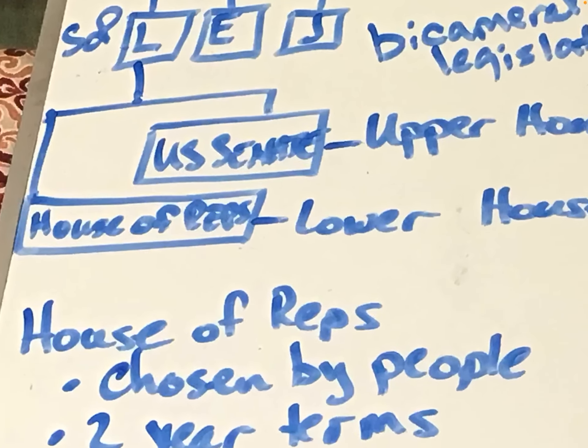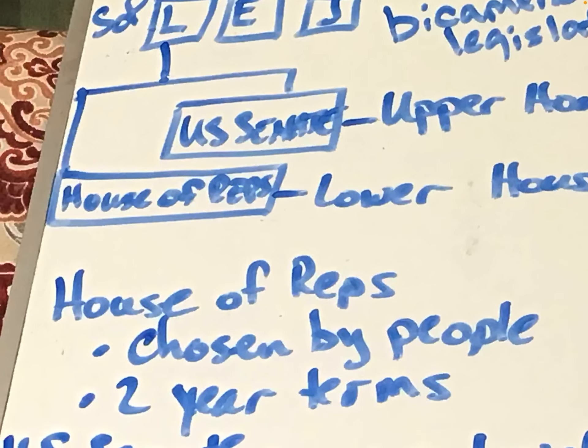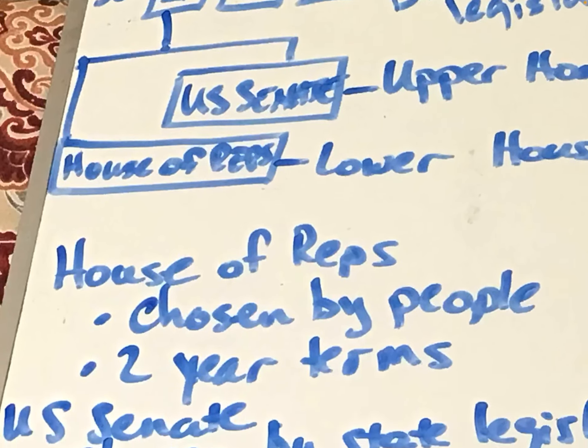With the House of Representatives, members are chosen directly by the people. At the time of the writing of the Constitution, they serve two-year terms. The House is meant to be very responsive to the wants and wishes of the people, so they serve only two-year terms but are chosen directly by the voters.